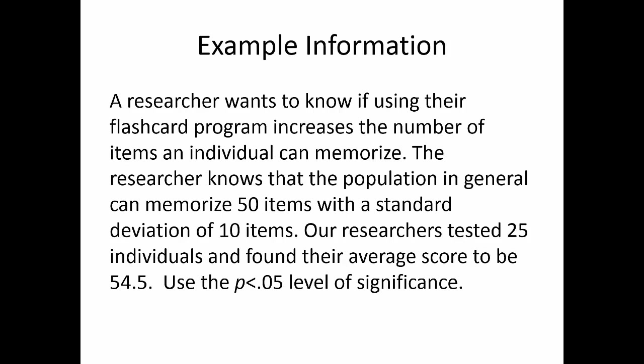The first example gives the basic overview of what's going on. A researcher wants to know if their flashcard program is working by increasing the number of cards so students can do better on tests. In general, people can memorize about 50 items — that's mu — with a standard deviation of 10 — that's sigma. Our researcher tested 25 people, so n=25, and their average score — the sample mean — is 54.5. We'll use α=.05 throughout.